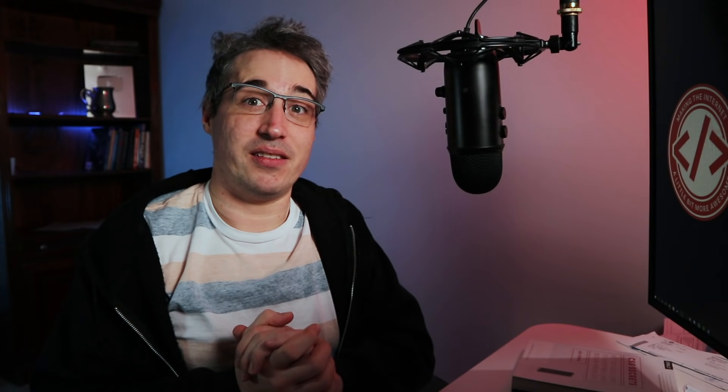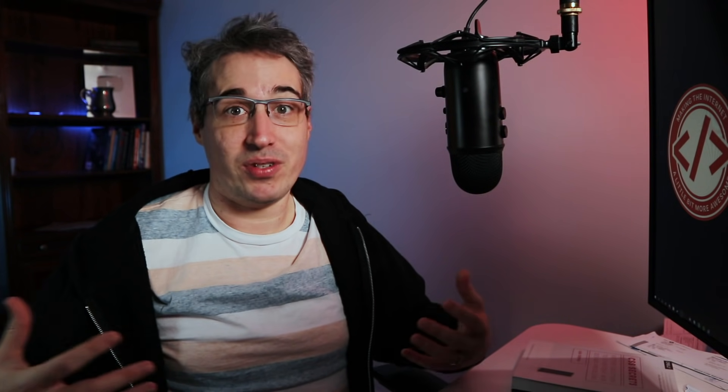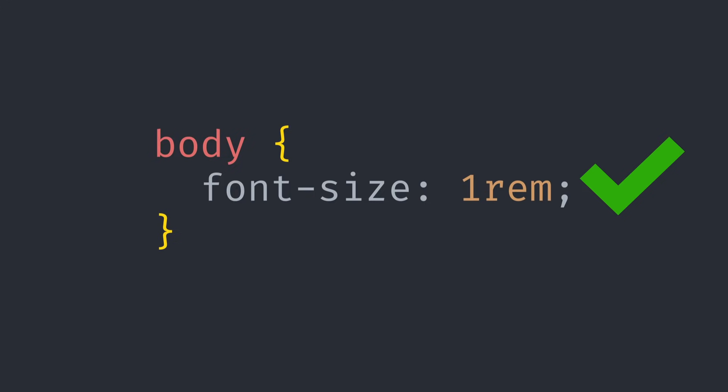Are you declaring a font size? If so, you probably want to go with rem. Rem are like em in that they're relative units, but in the case of rem, they are relative to the font size of our root element, which is our HTML element. Most of the time that defaults to 16 pixels. You might wonder why not just use pixels — but rem are better because they adapt to the user's system and browser preferences, whereas pixels lock things in and can overwrite a user's preferences.